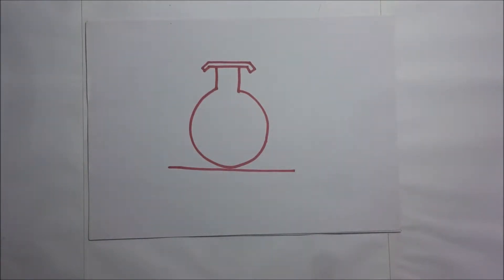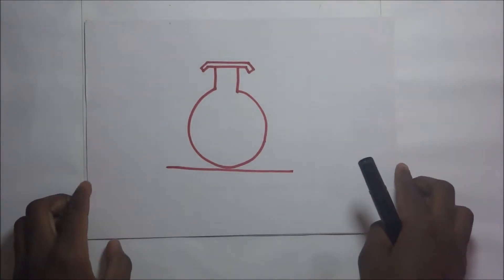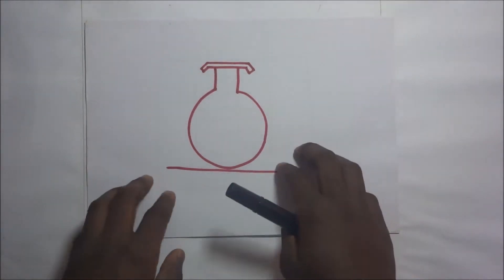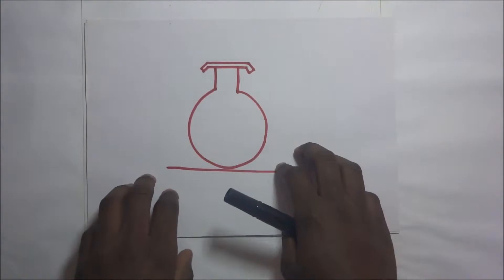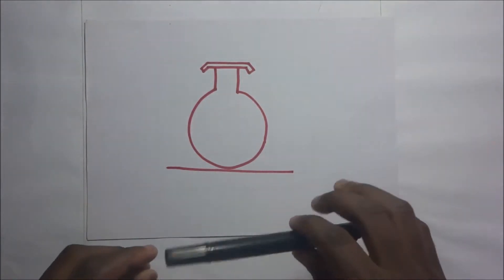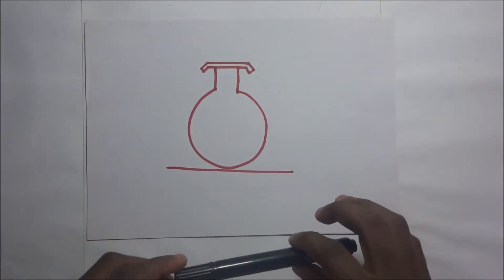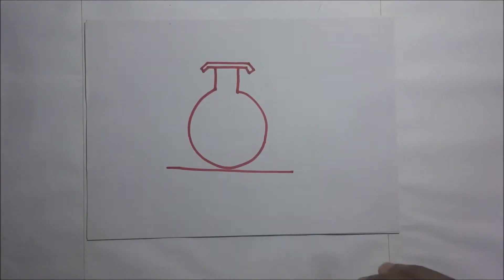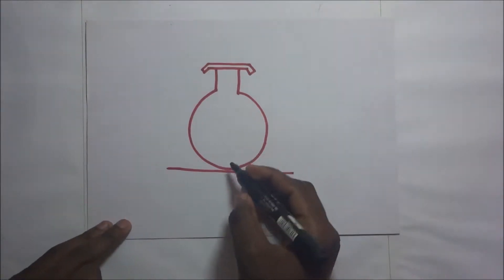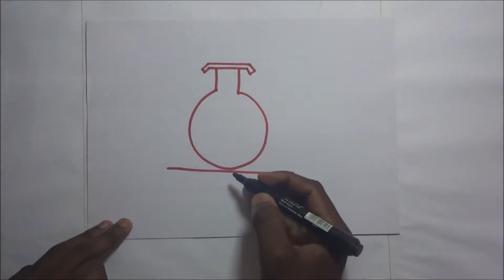What is the first law of thermodynamics? The first law of thermodynamics tries to relate the principle of conservation of energy to how heat supplied into a system relates to the internal energy and work done.